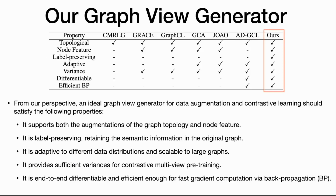This table shows that our graph view generators have superior benefits over existing methods. An ideal graph view generator should: support both topology structure and node feature augmentation; be label-preserving to avoid noisy samples; be adaptive to different tasks and datasets since graph scale and structure vary widely; have variance in its generation results so that outputs of the same input are similar but not identical; and be differentiable so that backpropagation can optimize it efficiently.